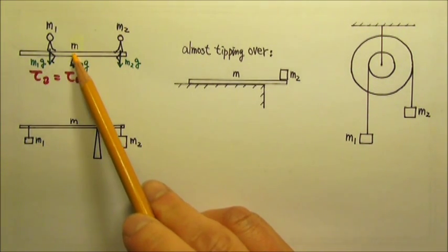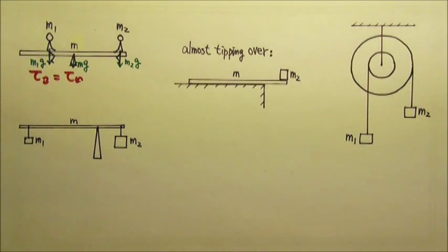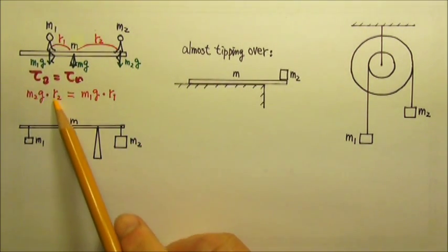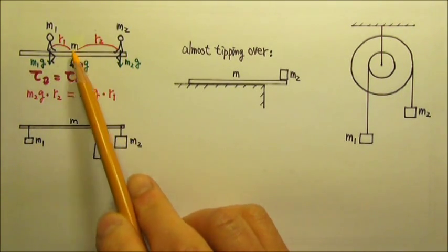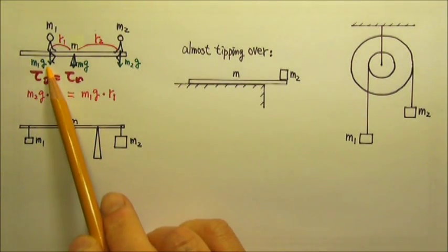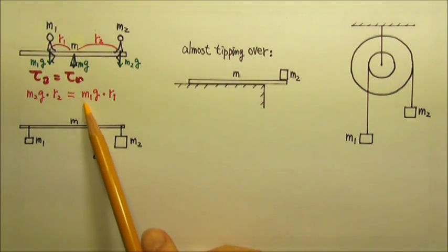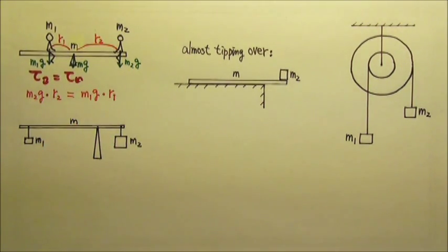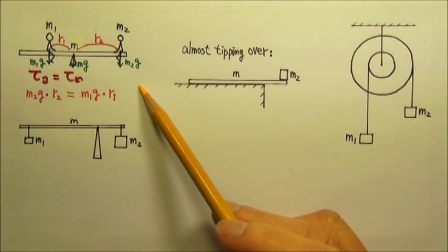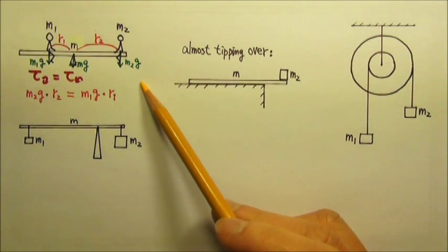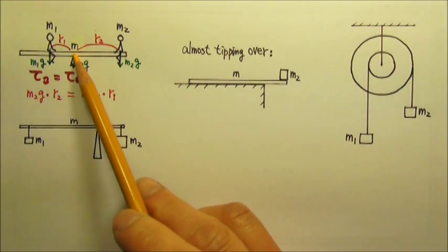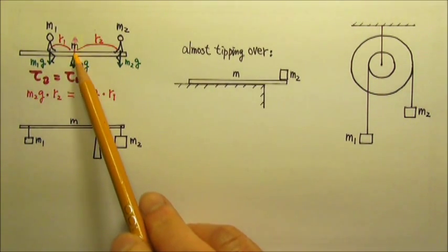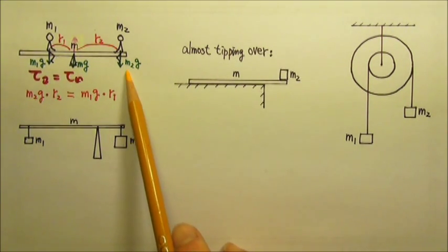Whatever force the axle exerts on the seesaw also produces no torque. So in this case, the clockwise torque is produced by M2g — the force times the lever arm R2 — equals the counterclockwise torque produced by M1g times its lever arm. Of course, we can cancel the g on both sides. We only need to worry about net force being zero if we are asked to find the force from the axle, in which case the upward force from the axle equals all three mg's added together.